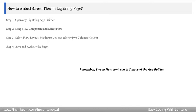Another option: if you want to place the flow component in your lightning record page, you can open the record directly. From the record, click the setup icon, and you'll get an option called Edit Page. After clicking Edit Page, you can go to the lightning app builder for that particular lightning record page.